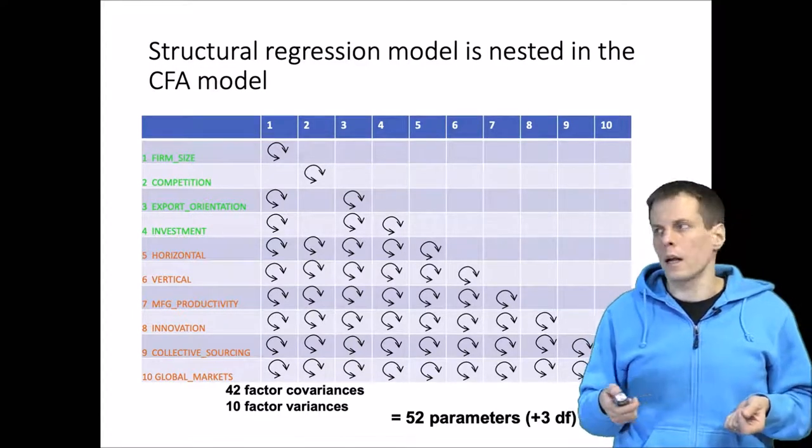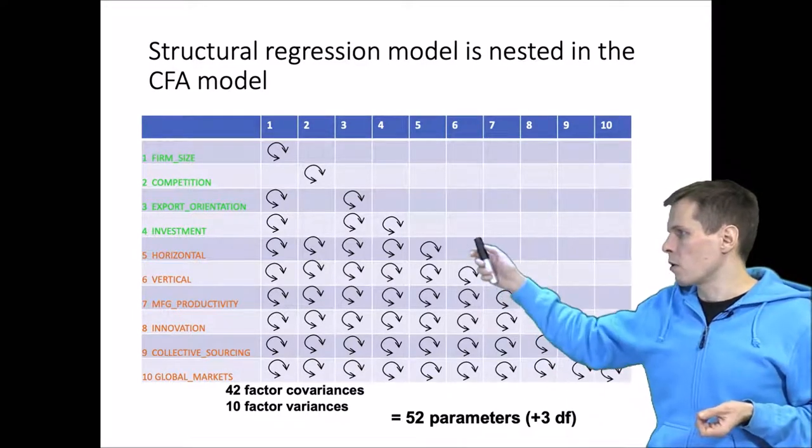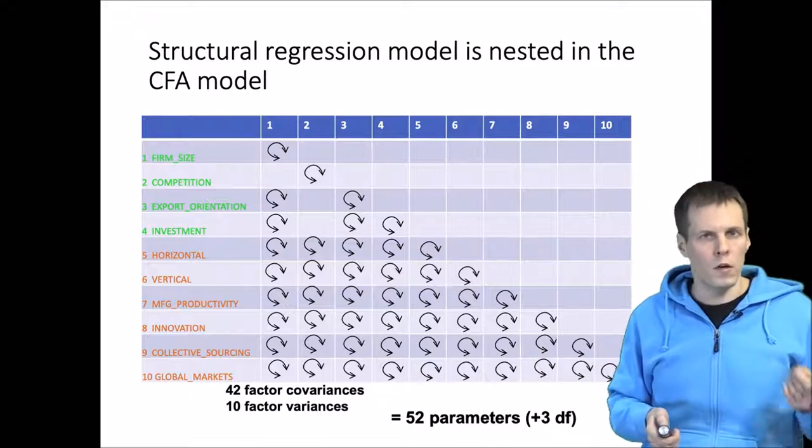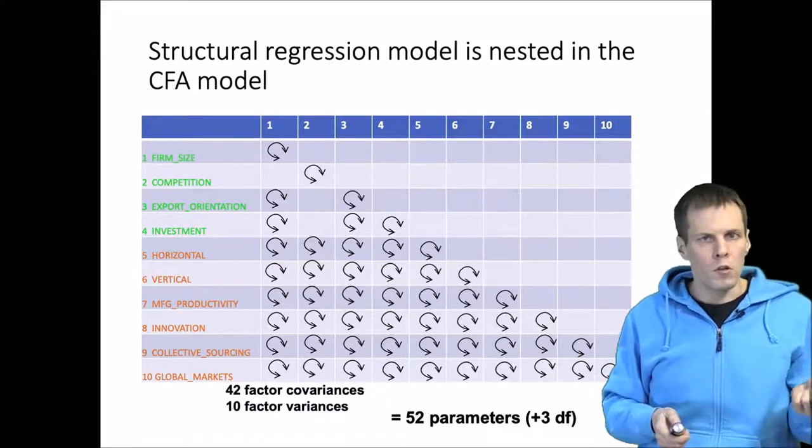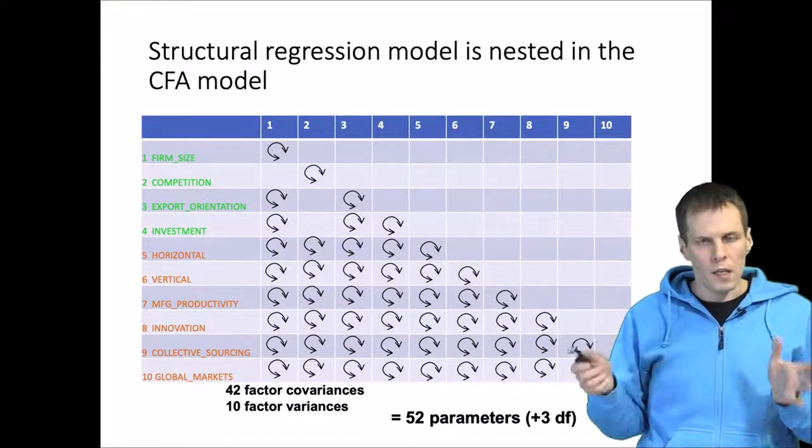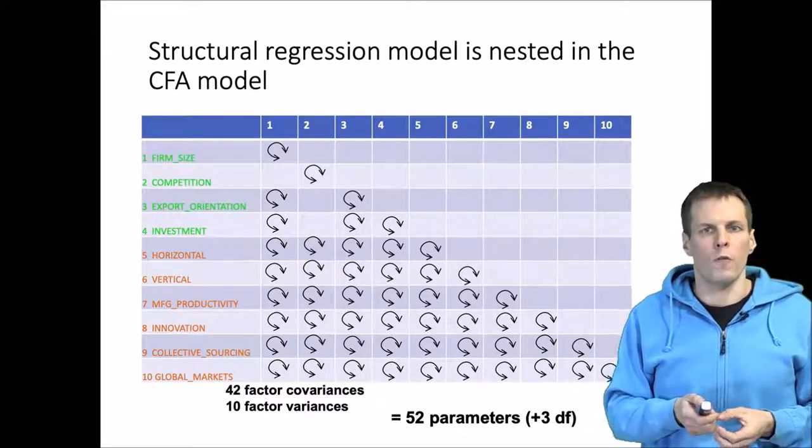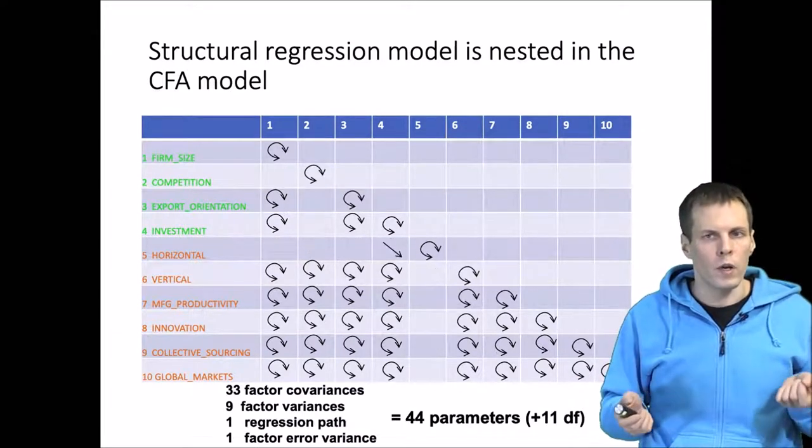Then we proceed and we look at each variable at a time. We look at horizontal. Horizontal was an endogenous variable, so we take it away from the matrix of exogenous variables.